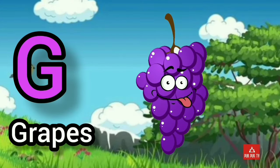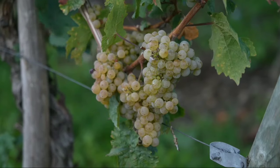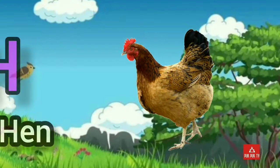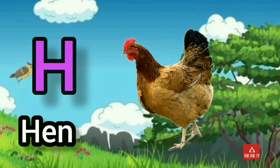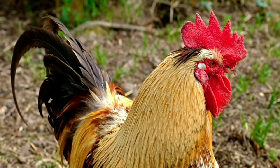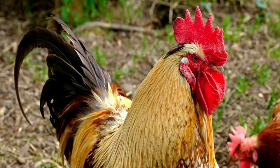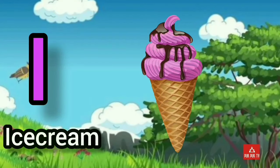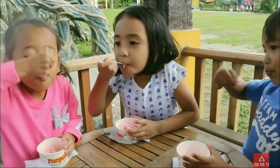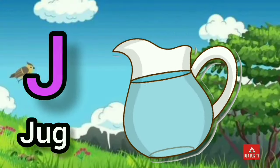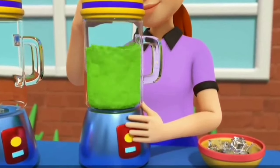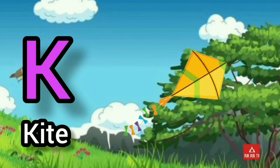G. G for Grapes. H. H for Hen. I. I for Ice Cream. J. J for Jug. K. K for Kite.